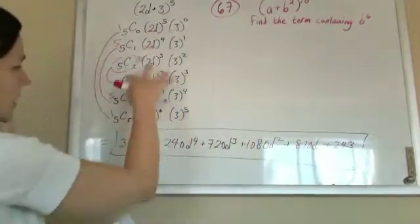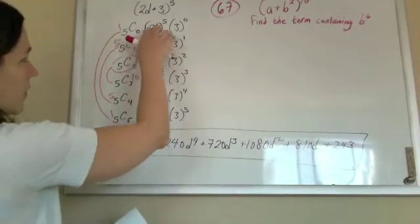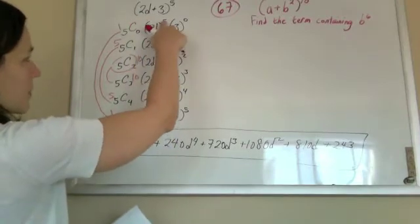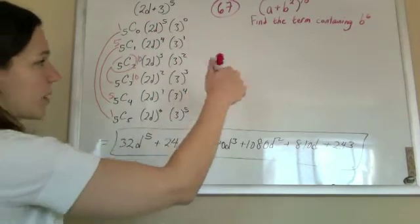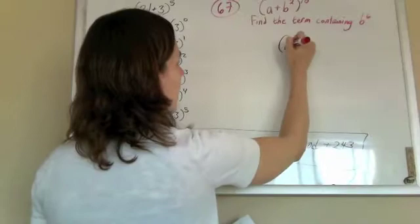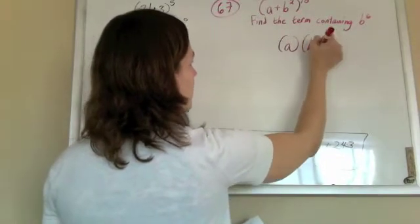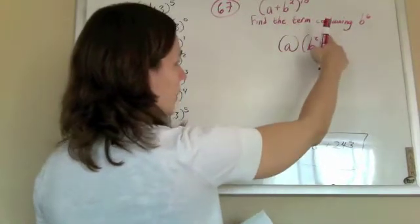So we notice when we set them up, all of them have this first guy raised to some power, and then the second guy raised to some power. So my term is going to have a raised to some power and b squared raised to some power.